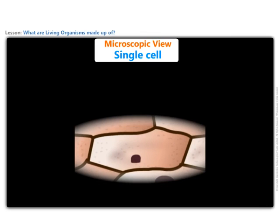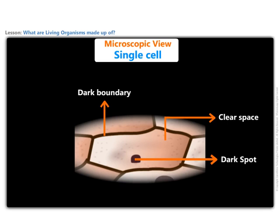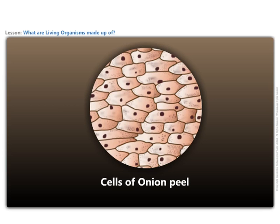The skin of the onion contained regular shaped structures. Each structure had a dark colored boundary, a dark spot within the boundary, and the space that filled the structure was light colored. The structures that you just observed were very similar.